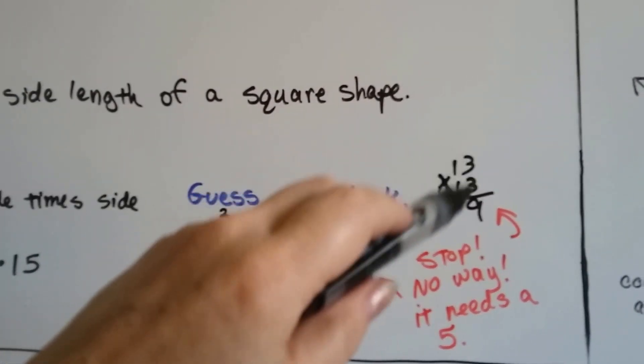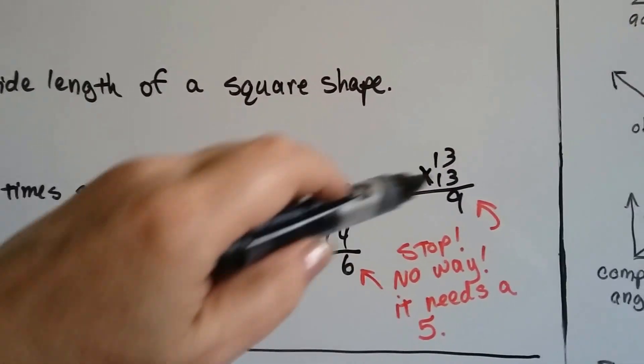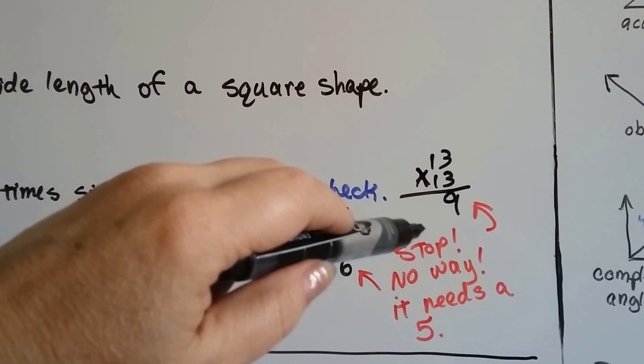Now, knowing that I'm multiplying two-digit numbers, I know that 9 would drop down into the product. And I was like, stop. No way. It needs a 5.